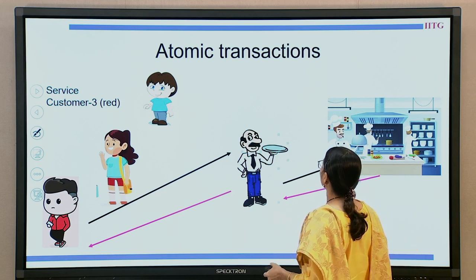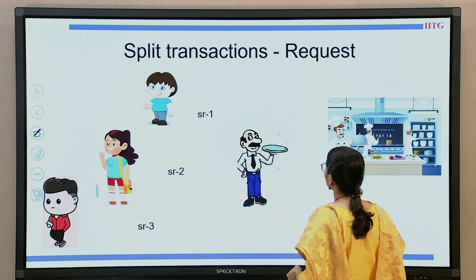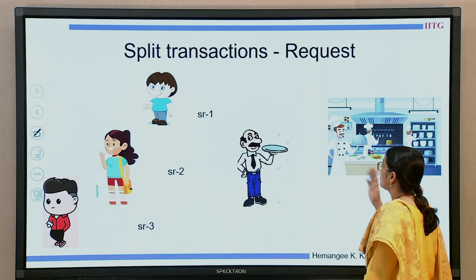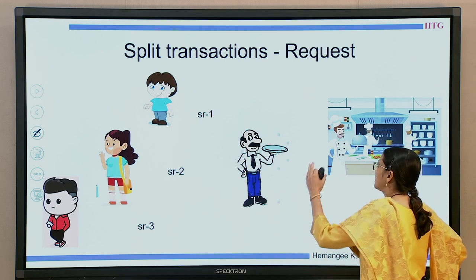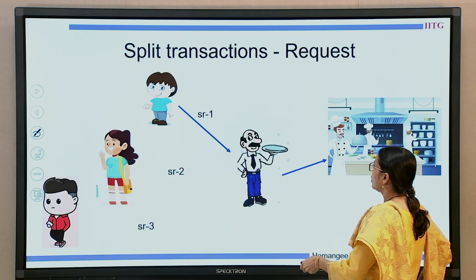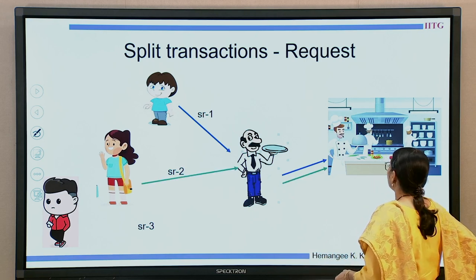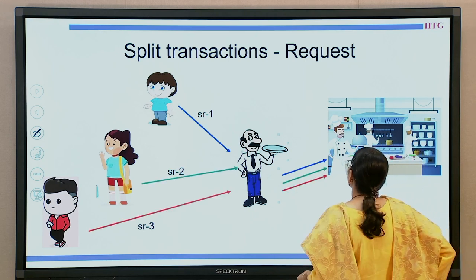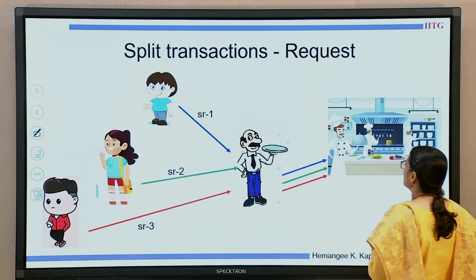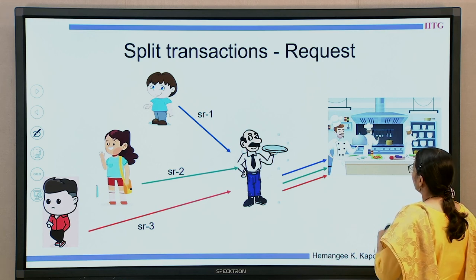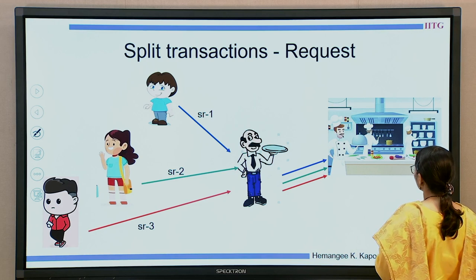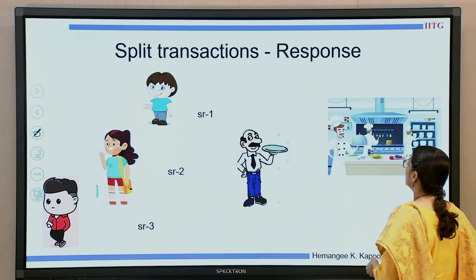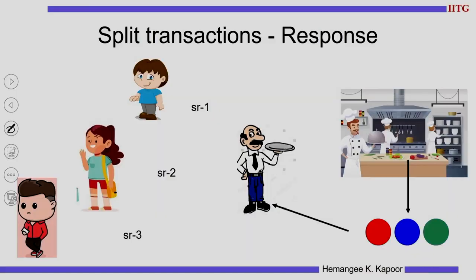Now if I change this scenario and move to a split transaction, moving out from an atomic transaction — here again we have the same scenario where all three place orders one by one and these orders are given to the back kitchen. They are going to take their time to complete the items, and then the items get ready and are given to the service person.